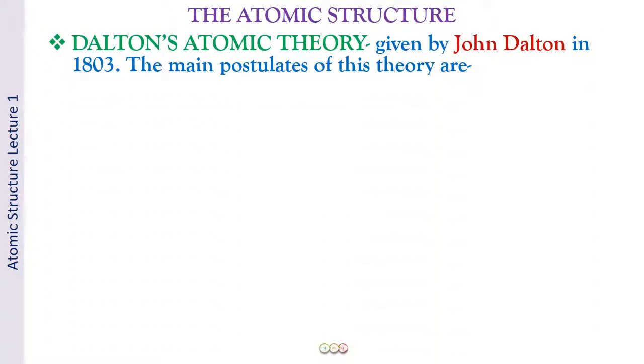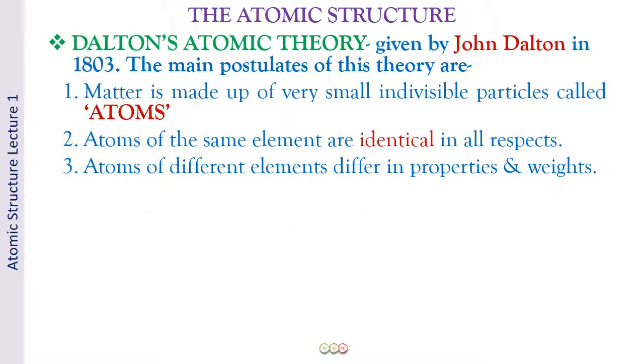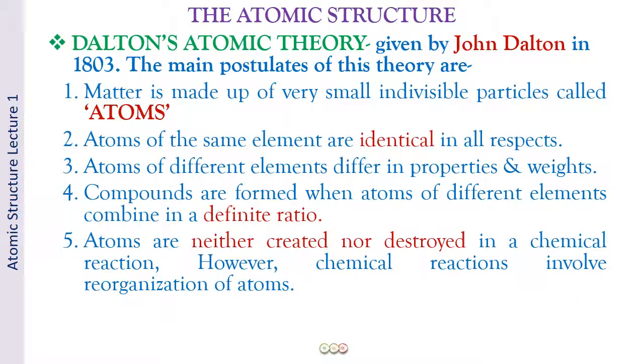And we have already discussed Dalton's atomic theory in the course, some basic concepts. So I would just briefly revise that with you so that we can move further. So the main postulates of Dalton's atomic theory are that matter is made up of very small indivisible particles called atoms. And the atoms of the same element are identical in all respects, be it mass, size, shape. And then we have atoms of different elements, they differ in properties and weights. Next, he said that compounds are formed when atoms of different elements combine in a definite ratio. Atoms are neither created nor destroyed in a chemical reaction. However, chemical reactions involve the reorganization of atoms.